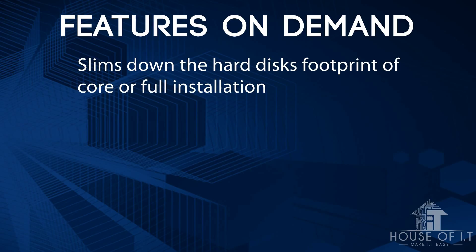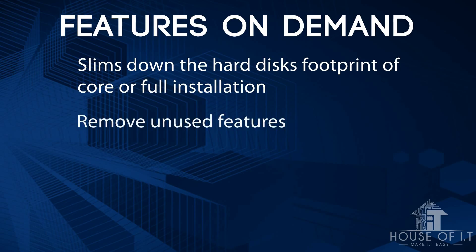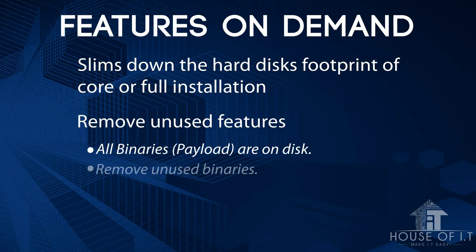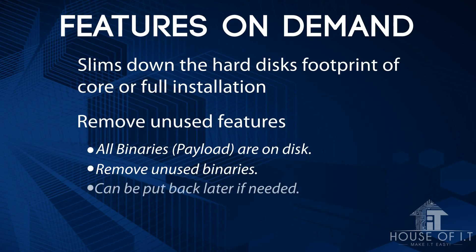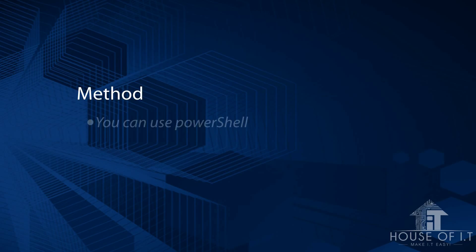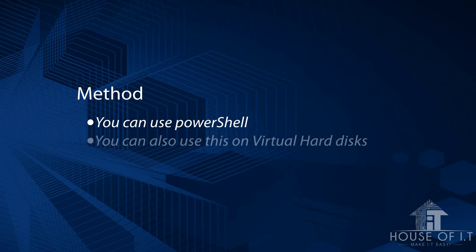What Features on Demand allows you to do is not only avoid using those features, but also free the disk space those binaries consume — although you can still restore those binaries later. To put them back, it will either get the source files from Windows Update, or use a source — you'd need a mounted WIM file from the installation media on your disk.